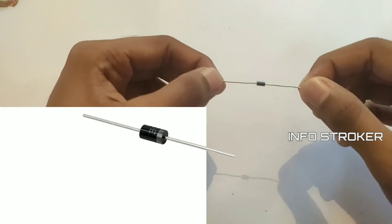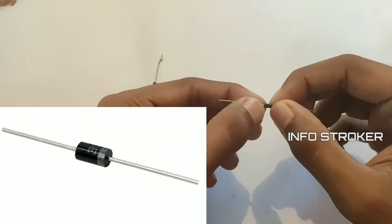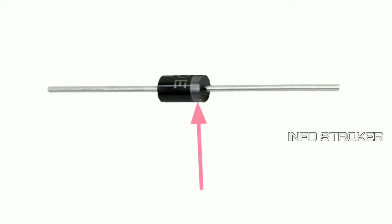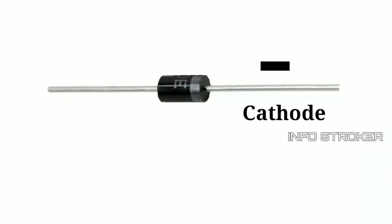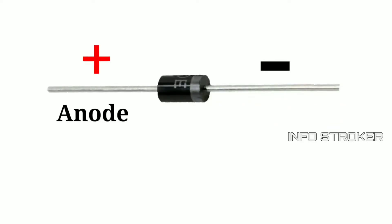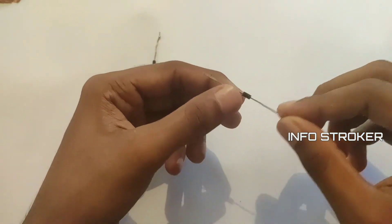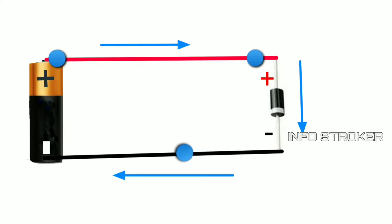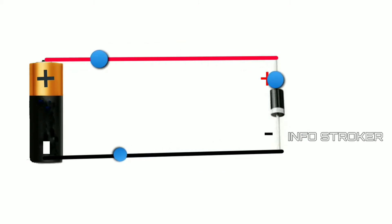Here are two layers of this diode. One layer is white color, and the other layer is the negative terminal. This layer is the positive terminal — the white color layer is the N-side, and here in this diode you have a black color.